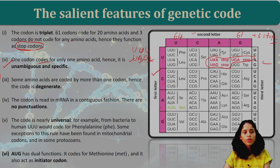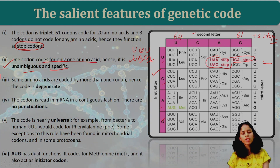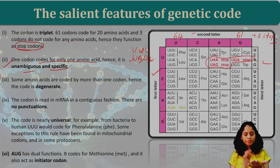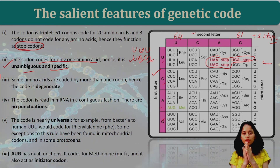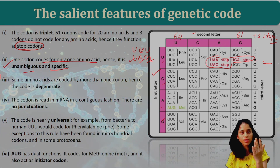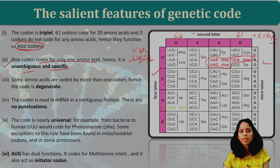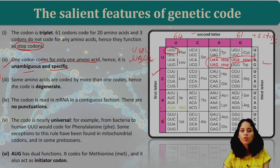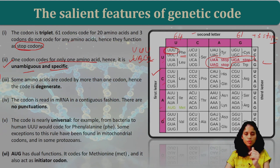One codon codes for only one amino acid. Hence, the genetic code is unambiguous and specific. Unambiguous means there is no confusion — one codon has a code for one specific amino acid. That is the specificity of the genetic code.